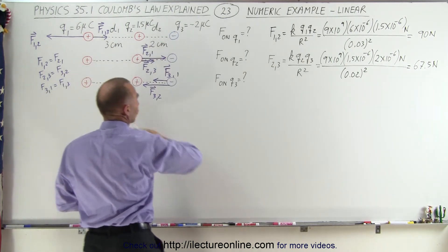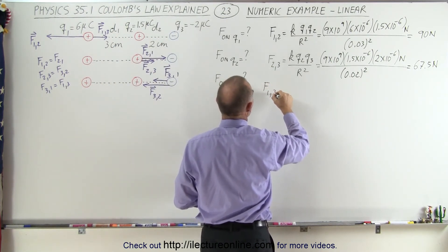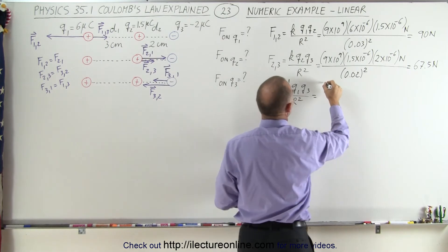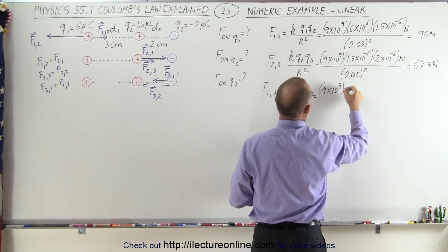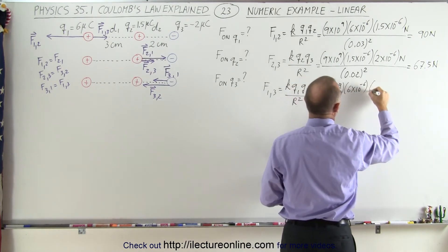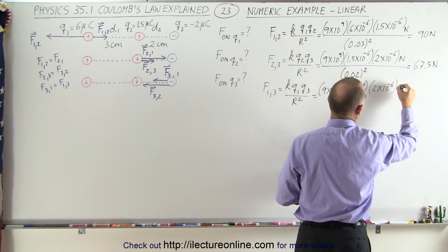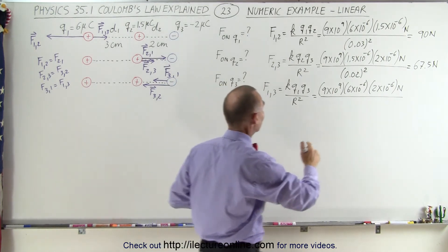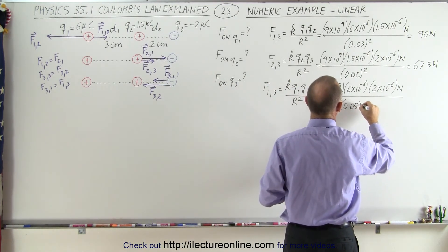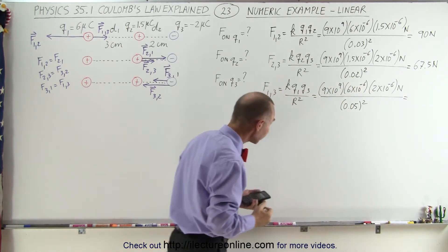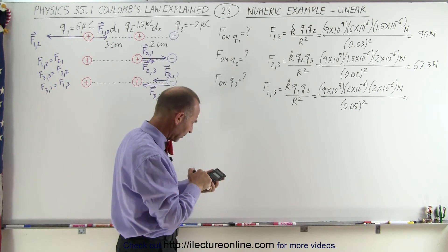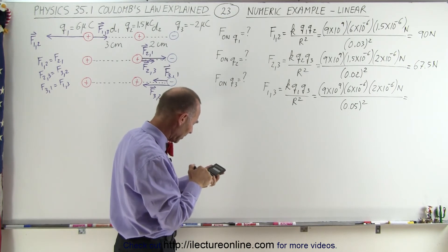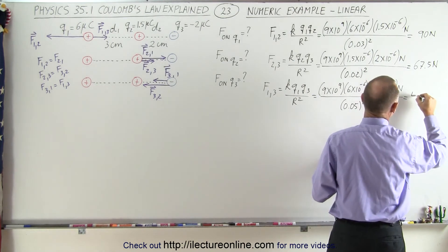Now the force between the first and the third charge: F13 is equal to K times Q1 times Q3 divided by the distance between them squared. That would be 9 times 10 to the 9th, times 6 times 10 to the minus 6, times 2 times 10 to the minus 6 — we don't care about the negative sign because we're finding the magnitude. The distance between them is 5 centimeters, so 0.05 meters squared. That gives us 43.2 newtons.